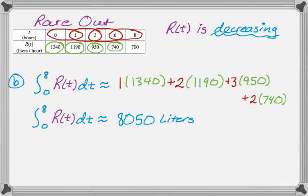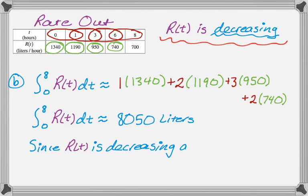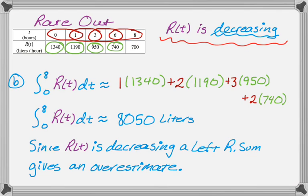The question says, is this an over or an underestimate? Well, they went out of their way to tell us that R(t) is decreasing. And for decreasing functions, a left Riemann sum will always give you an overestimate. So since R(t) is decreasing, a left Riemann sum gives an overestimate. And that's really all you need to do for that.